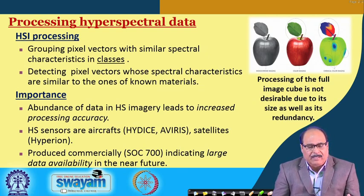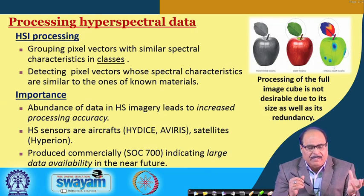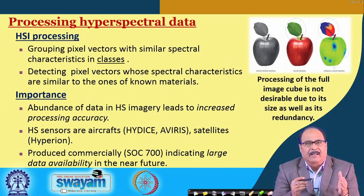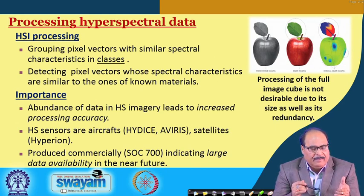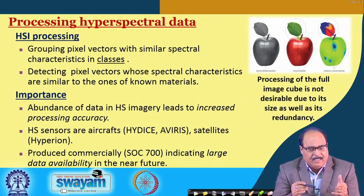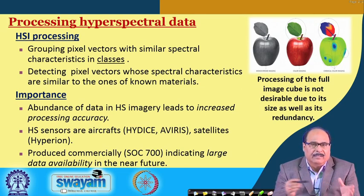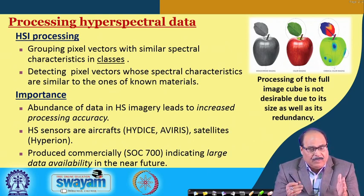Once the hyperspectral data is acquired, it is processed. Processing means grouping pixel vectors with similar spectral characteristics into classes, and detecting pixel vectors whose spectral characteristics are similar to those of known materials — in that way the data is grouped and analyzed. Hyperspectral image processing is very important nowadays, as the abundance of data in hyperspectral imagery leads to increased processing accuracy.